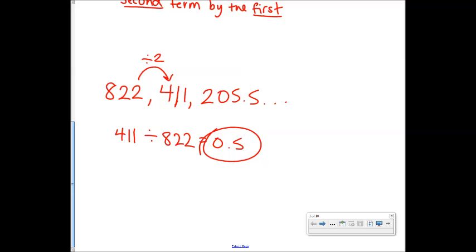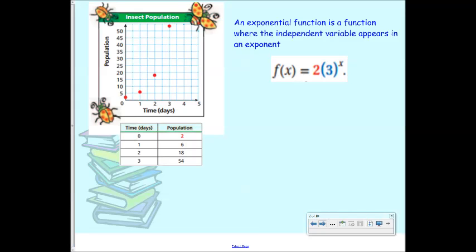That was just a random tangent because I forgot to do that yesterday. We're going to use that and move into exponential functions. As a review for the year, we started with linear functions — our whole first semester was on linear functions, which when graphed make a straight line. Then this semester we moved into quadratic functions, which make a parabola. And now we're going to move into exponential functions.